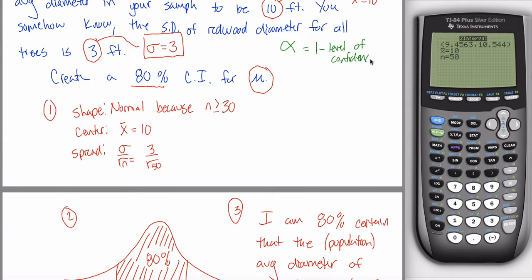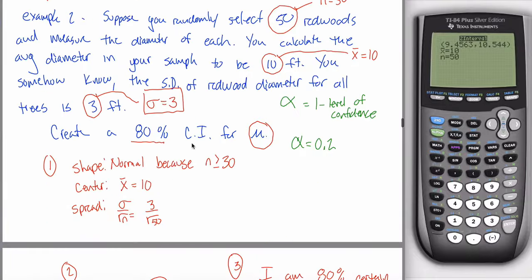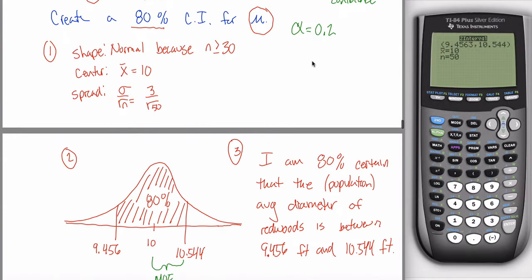In this problem, the level of confidence is 80% or 0.8, so alpha is 0.2. If it was 99% confidence, alpha is 1% or 0.01. If it was 95% confidence, alpha would be 5% or 0.05. They'll always tell you the level of confidence, so you can always get alpha. Going forward, when it states the level of confidence, we'll immediately state alpha, because it'll be really important in the next section.